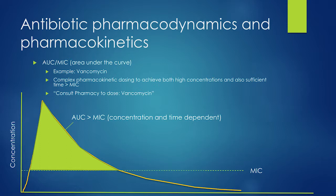Vancomycin is a bit more complicated — it has a combination of both concentration-dependent and time-dependent killing. The true measure of effectiveness of vancomycin is area under the curve to MIC. You need high peaks to distribute the drug to the infection site, but also adequate time above the MIC. So the true measure is not peak levels or trough levels — it's area under the curve.